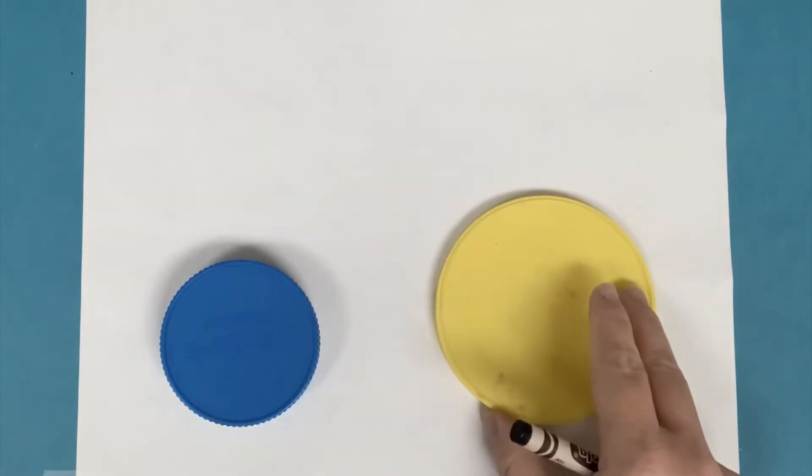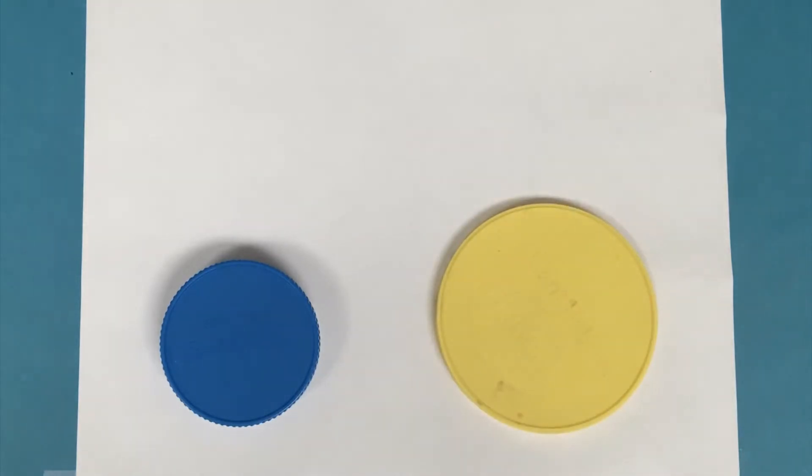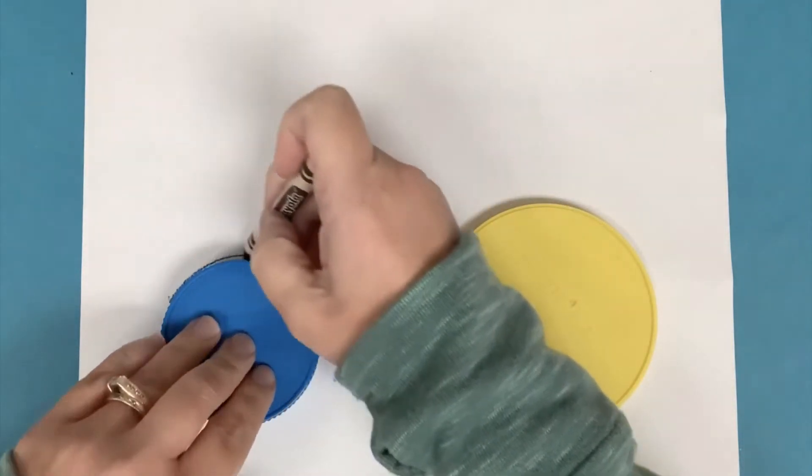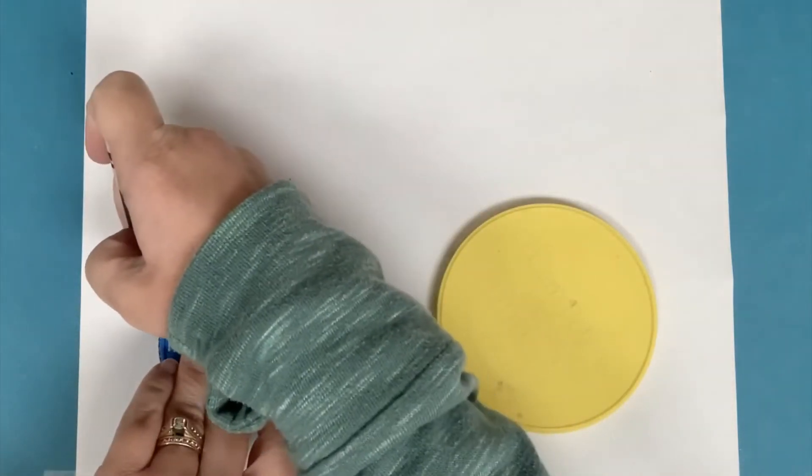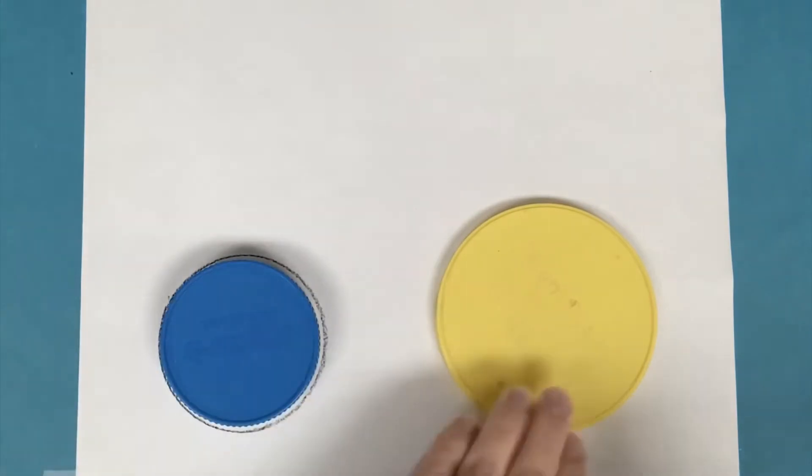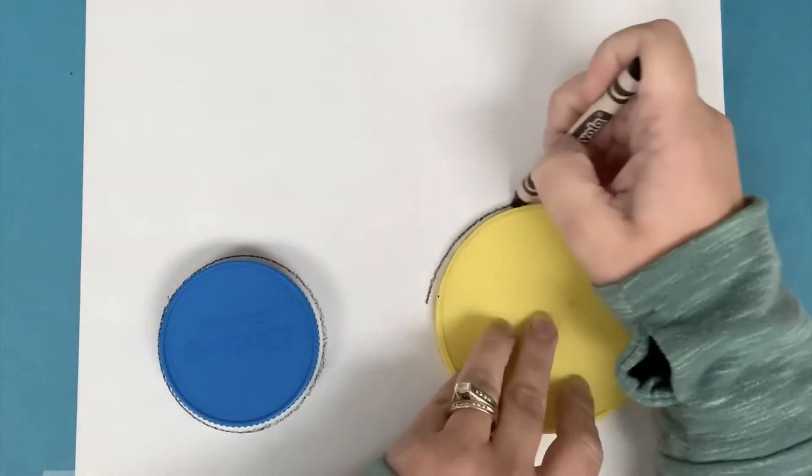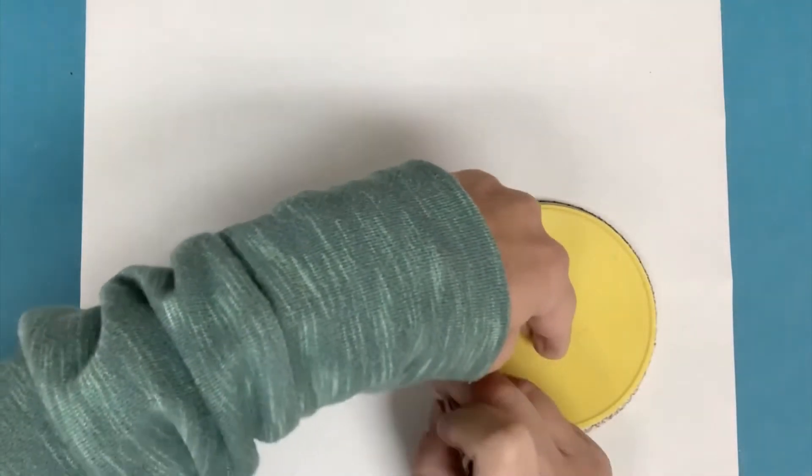So I'm going to put my lids right next to each other, but not touching. And I'm going to take a black crayon and trace around my lids. Sometimes it's easier if somebody holds the lid down while you trace around it so that it doesn't move on you.